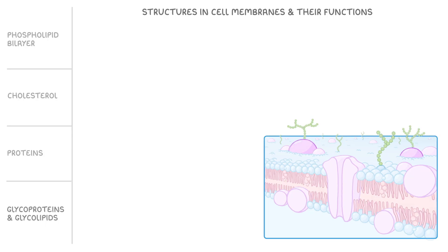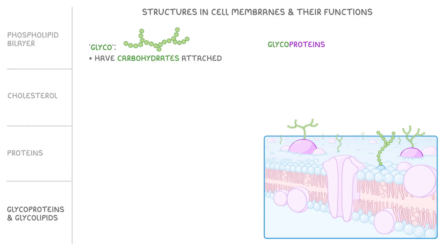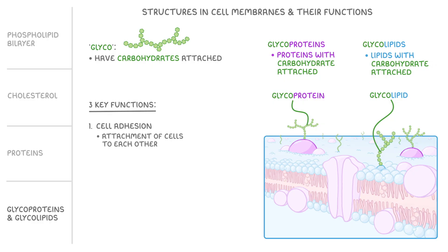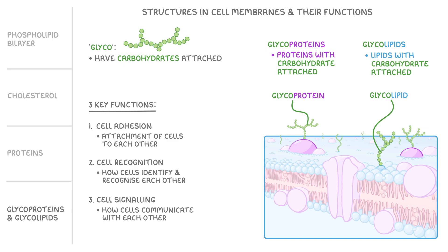Finally, let's go over glycoproteins and glycolipids. The 'glyco' part means they have carbohydrates attached to them. So glycoproteins are proteins with a carbohydrate attached, and glycolipids are lipids with a carbohydrate attached. Both types of molecule are involved in three key functions: cell adhesion, which is the attachment of cells to each other; cell recognition, which is how cells identify and recognise each other; and cell signalling, which is how cells communicate with each other.